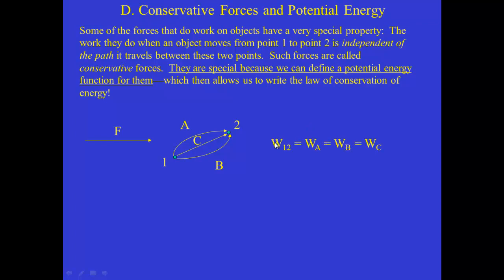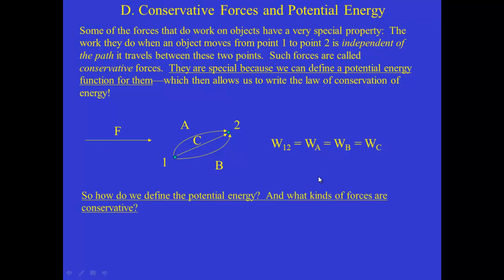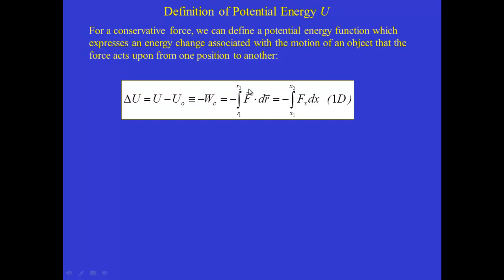Just in a schematic sense, the work this force does from 1 to 2 is equal to the work it does along path A, B, C, or any path if it's a conservative force. This begs the question: how do we define potential energy, and what kinds of forces do we know that are conservative and have this property? So let's first define potential energy.